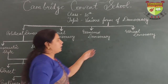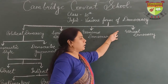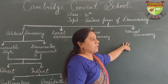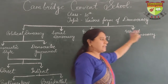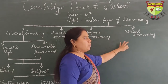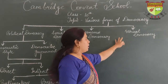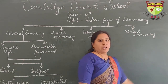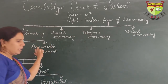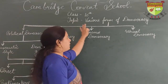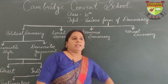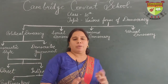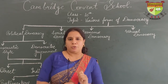Now comes ethical democracy. Ethical democracy is that form of democracy which entirely believes in moral values. It says that whatever work the government is doing should be based on moral values. So I hope this much is clear to you. This was the various forms of democracy. In the next video, I am going to explain you about the kinds of democracy. Thank you.